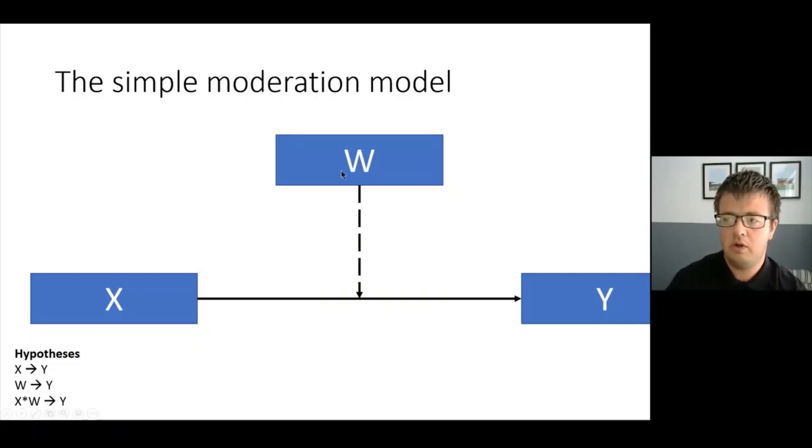What we're looking for when we're looking for moderation is whether a change in this variable here—so this can be a continuous variable or it can be a grouping or dichotomous variable—whether that changes this relationship here. So if you've got two groups, it might be that in one group you've got a significant effect of X on Y where X is predicting Y significantly, but in the other group you don't have that relationship. Now what that means is that this relationship that you were initially predicting is contingent or dependent in some way on the value of this moderator variable.